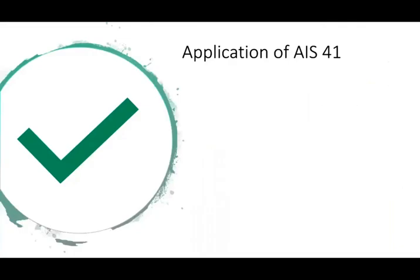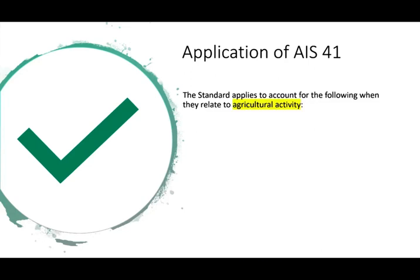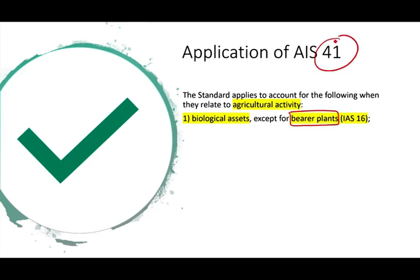What does the application of IAS 41 apply to? The standard applies to the following when they relate to agricultural activity. It applies to biological assets — living plants and living animals — except bearer plants. Any plant such as tomato or corn, or any animal, falls under IAS 41.